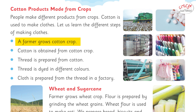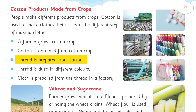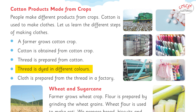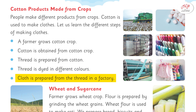A farmer grows cotton crop. Cotton is obtained from the cotton crop. Thread is prepared from cotton. Thread is dyed in different colors.